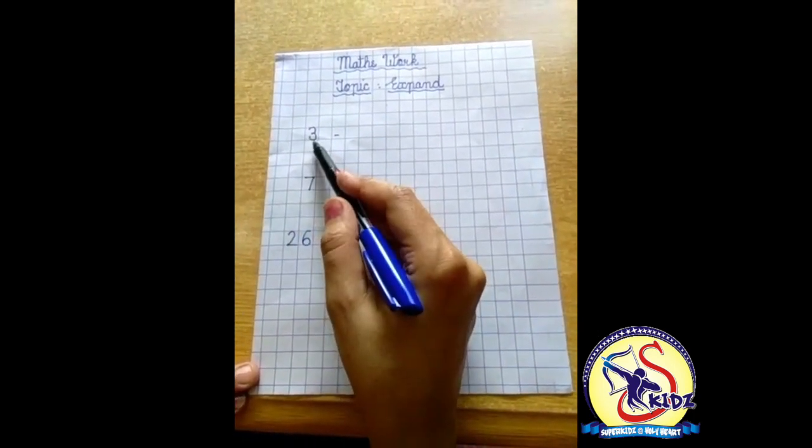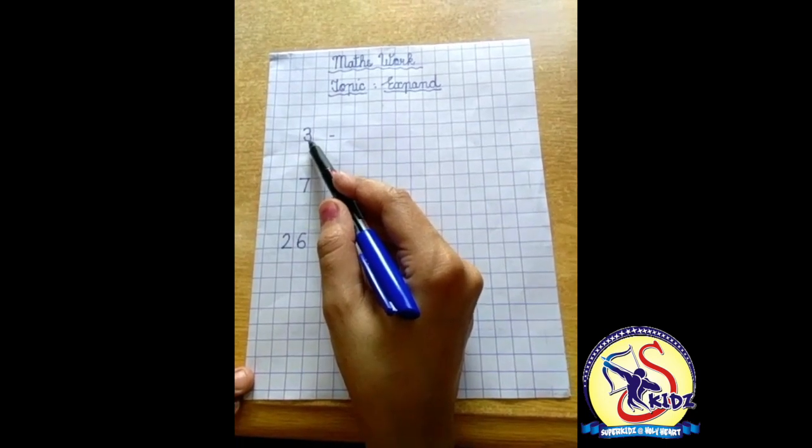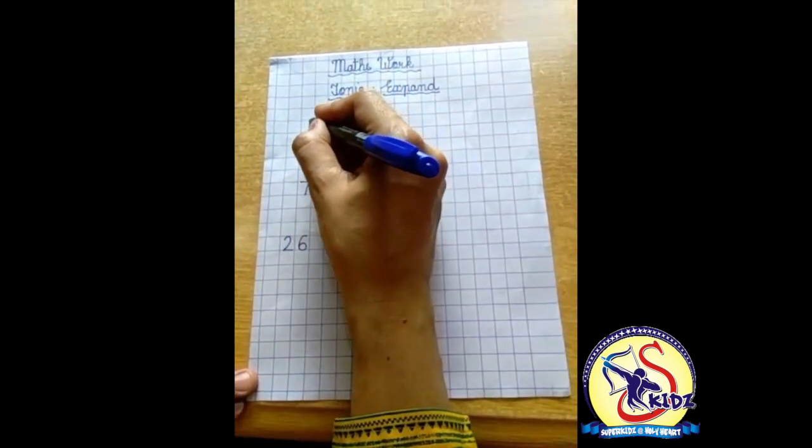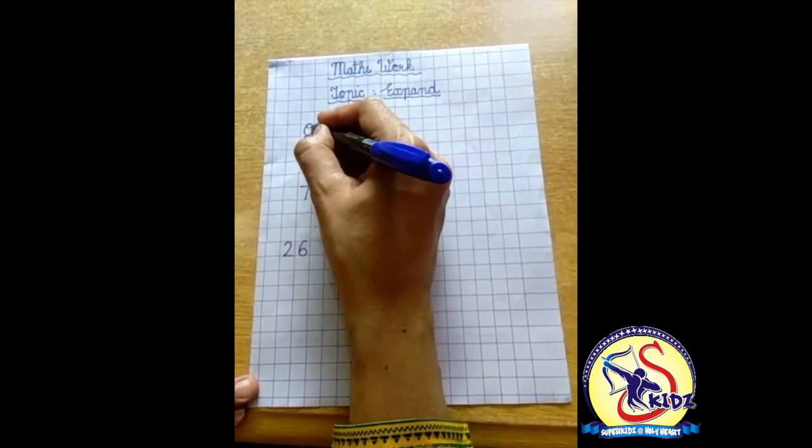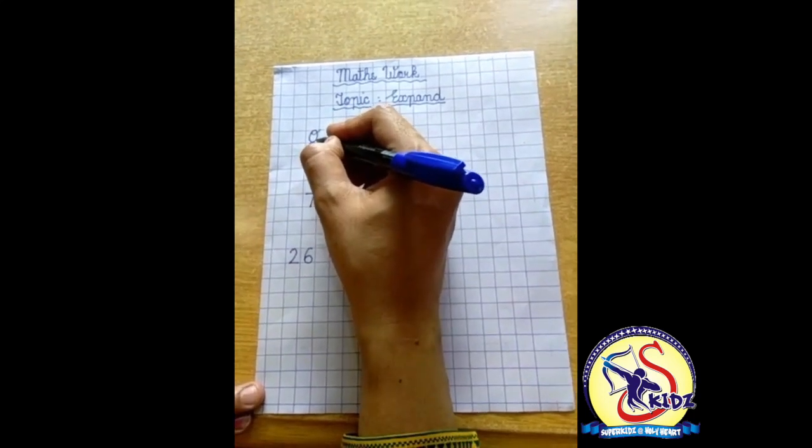So on number 3, what we write? We will write O. O means ones.